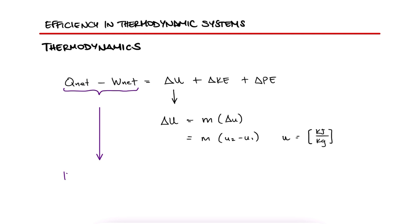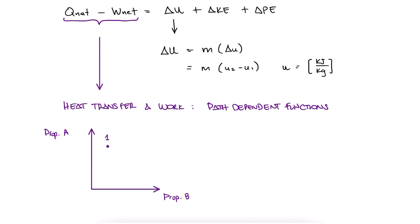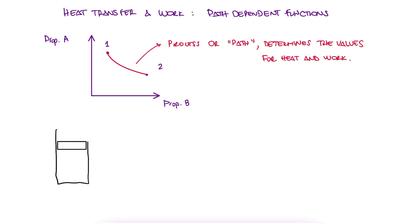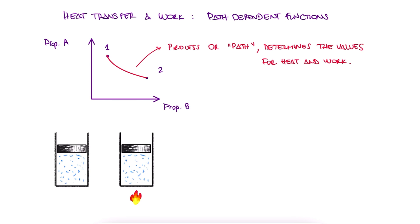In a lecture before that, we mentioned that the heat transfer and work are path dependent functions, meaning that depending on the path it took to go from state 1 to state 2, their values are different. For example, in a piston cylinder system where we add heat to make the piston go up, if we use the same definition of work as the integral of fdx.